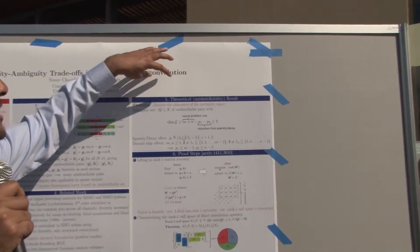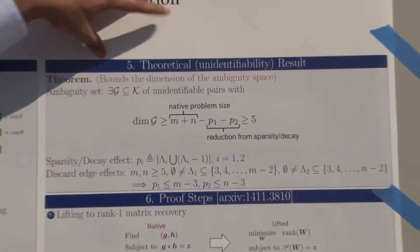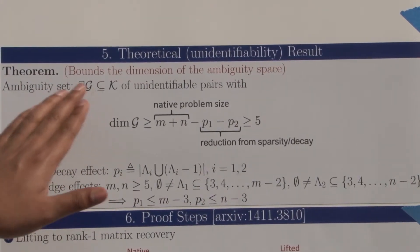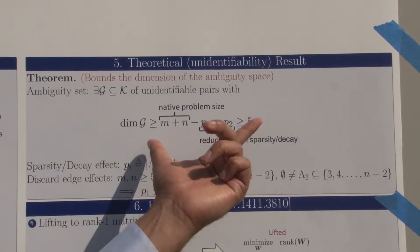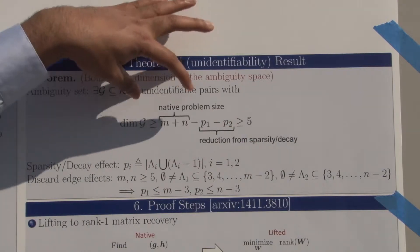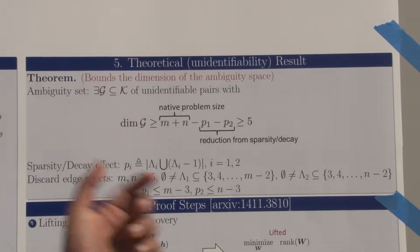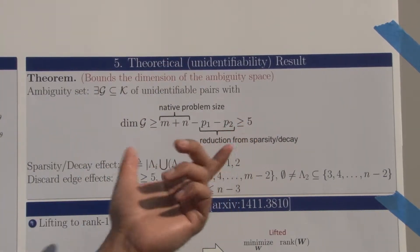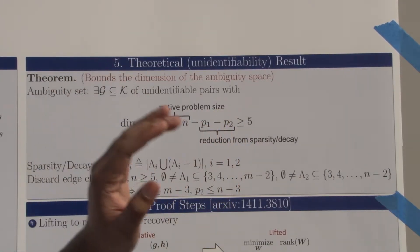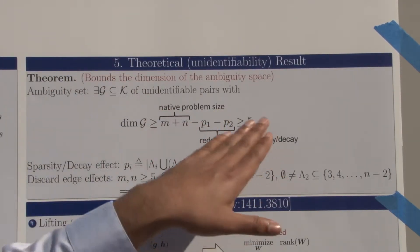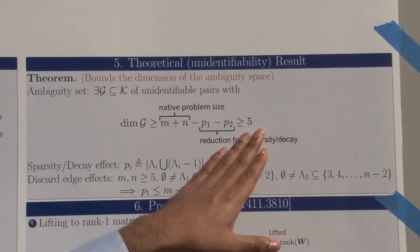We came up with the following result: you can bound the dimension of the ambiguity space—this is a set G—such that the dimension of G is lower bounded by an expression composed of the native problem size M plus N, minus a contribution from the sparsity. This reduces your degrees of freedom, but not by enough to make it go down to zero. In particular, you cannot go beyond five.